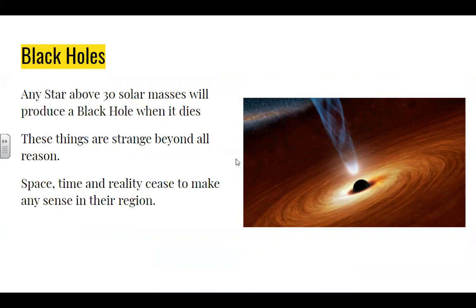Black holes: stars that have masses of 30 or more solar masses will go supernova and then create a black hole. If you try to stand on a neutron star — heat and radiation aside, which would kill you — you would be instantly killed because your atoms would be spread out over the surface of the neutron star like butter over toast. Just by standing there, the gravity would squish you so thoroughly that you wouldn't even be organic molecules anymore. You would be stretched into atoms across the surface.